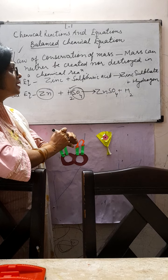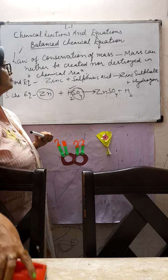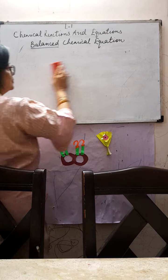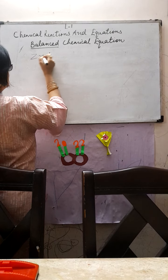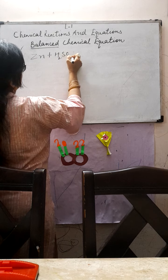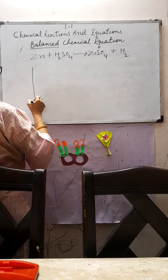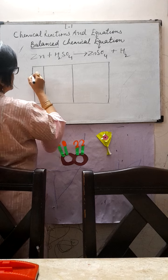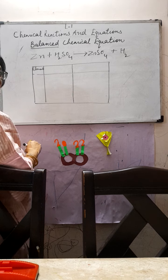This is the skeletal equation. Now we will count how many atoms of each element are there. Look carefully at how zinc and sulfate are combining and what remains — hydrogen. Now, to count, we will make a table and work on it. Here we will write all the elements which are present in the reaction.